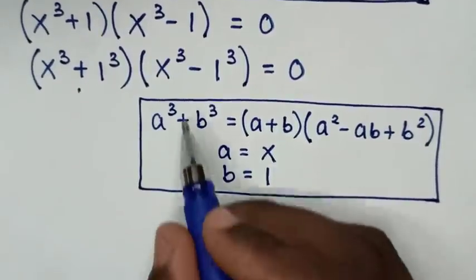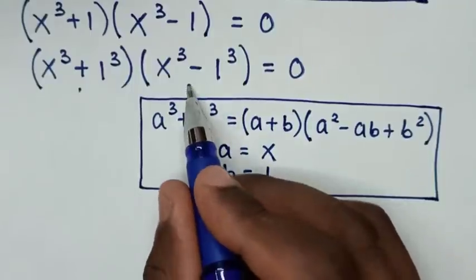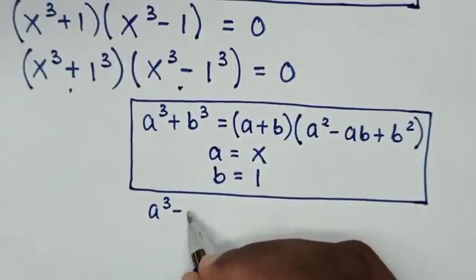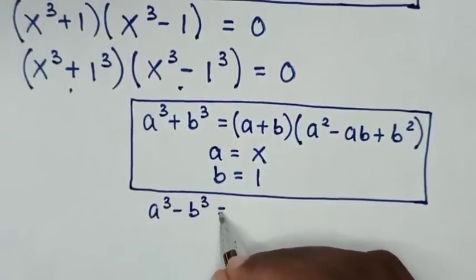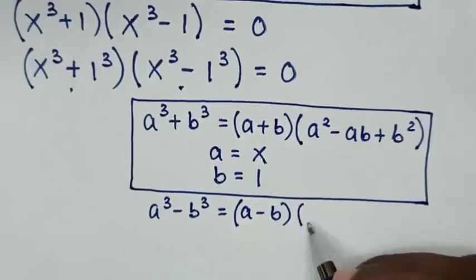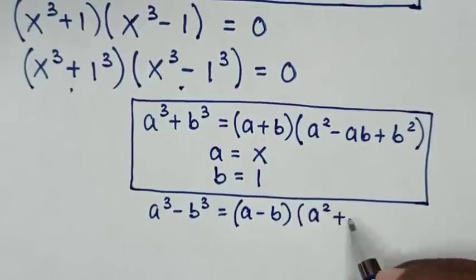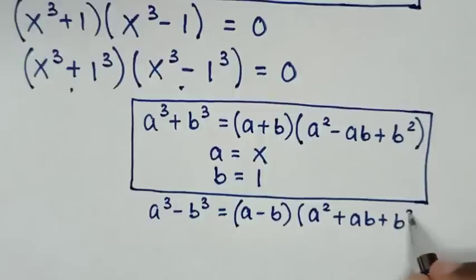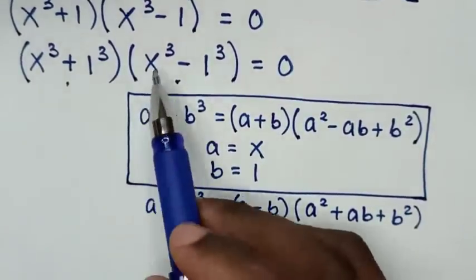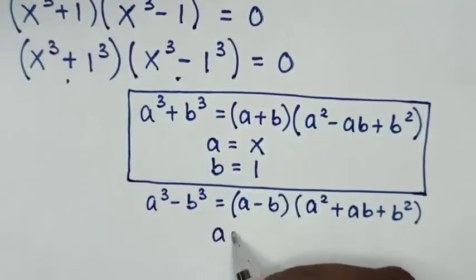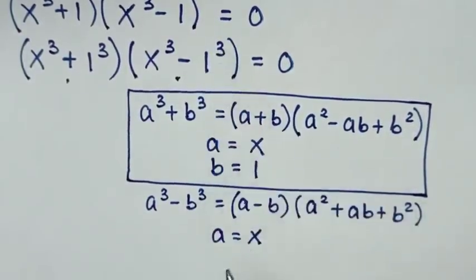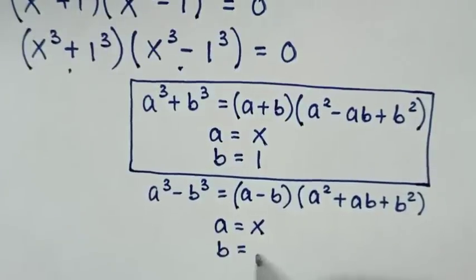The second part of the equation is also in the form of a perfect cube. So we'll apply the rule: a power 3 minus b power 3 equals (a - b)(a² + ab + b²). When we compare a power 3 with x power 3, then a equals x. And when we compare b power 3 with 1 power 3, then b equals 1.